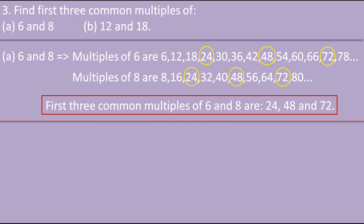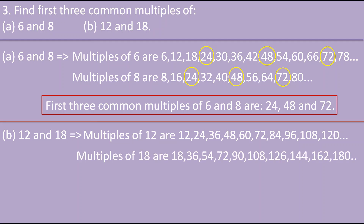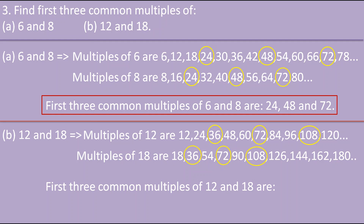For 12 and 18: the multiples of 12 and multiples of 18 are listed. Finding multiples is easy — just multiply by any number. The common multiples here are 36, 72 and 108. So the first 3 common multiples of 12 and 18 are 36, 72 and 108.